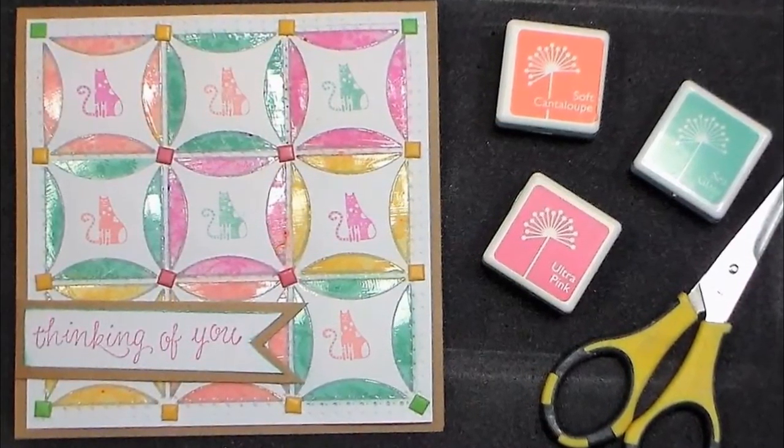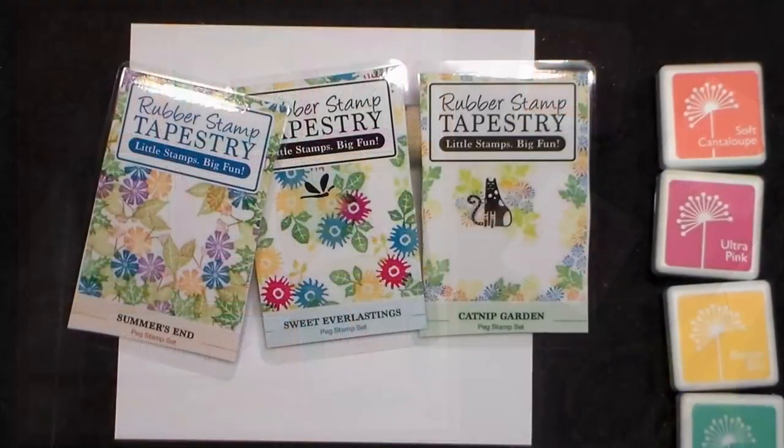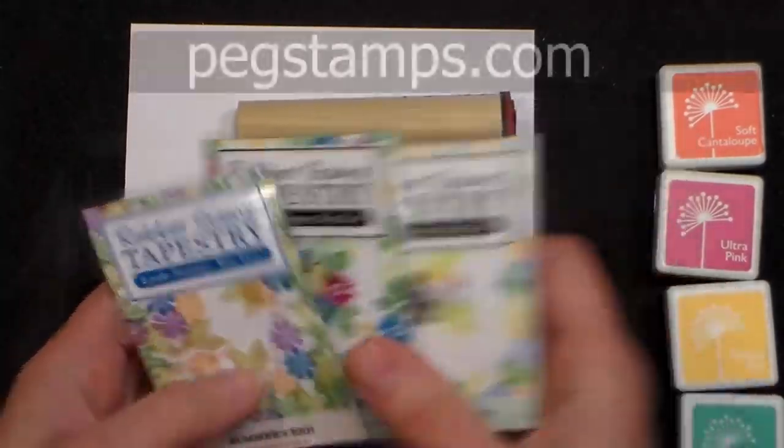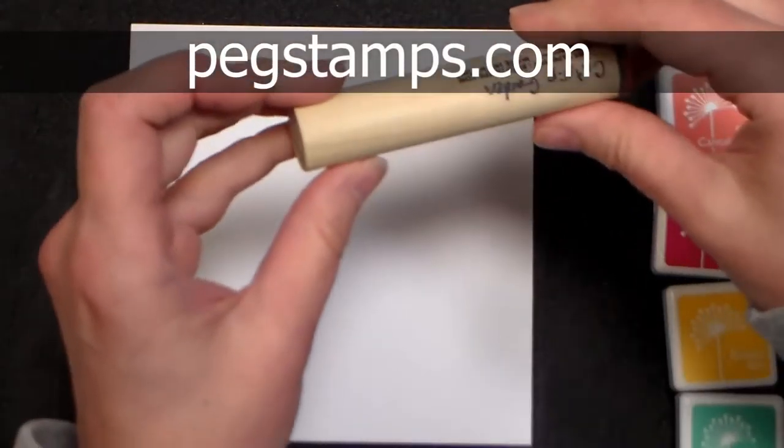Hi there, Lindsay here, the Frugal Crafter. Today we're going to make another quilt-inspired card using stamps from Rubber Stamp Tapestry. You can find them online at pegstamps.com, and I will have everything I used linked below in the video description.